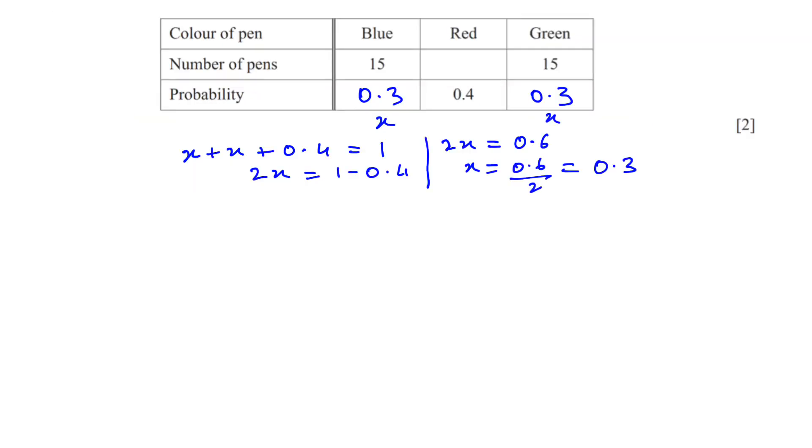Therefore 0.3 of the total number of pens is 15. 0.3 of means multiply, so the total is 15. This is a multiply so it's going to become a divide here. 15 divided by 0.3. That will give us 50.